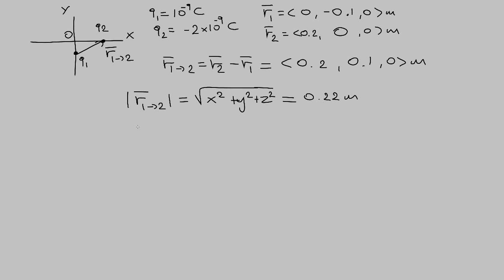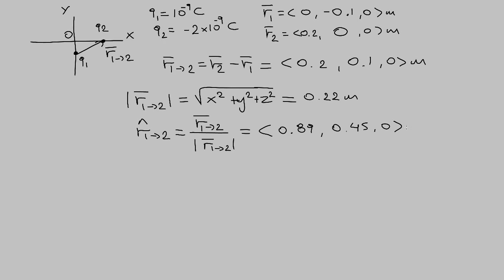The next step is to find the unit vector R-hat. To find any unit vector, we need to divide the vector itself by its magnitude. In this case, we already have the vector and we just calculated the magnitude of 0.22 meters. If we do these calculations, we will find that the unit vector has an x-component of 0.89, a y-component of 0.45, and a z-component of 0. Notice that unit vectors do not have any units because the units in the numerator cancel out with the units in the denominator.